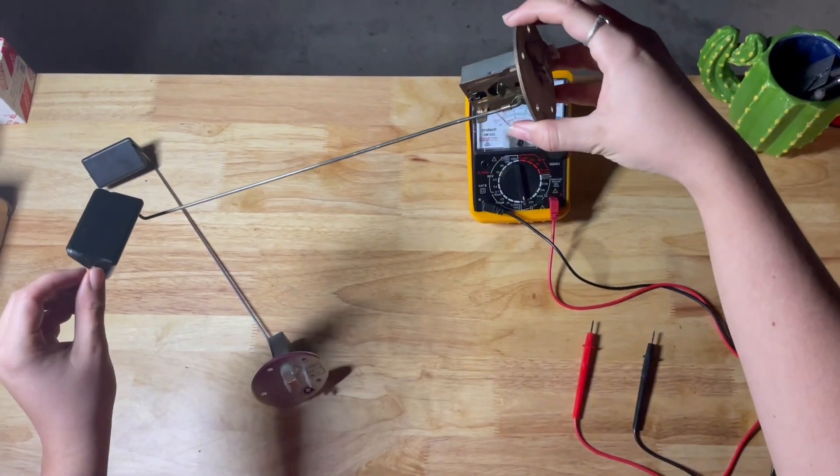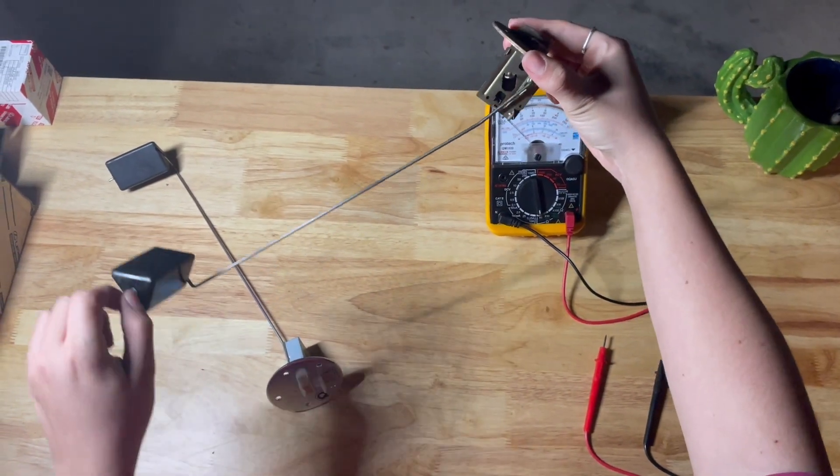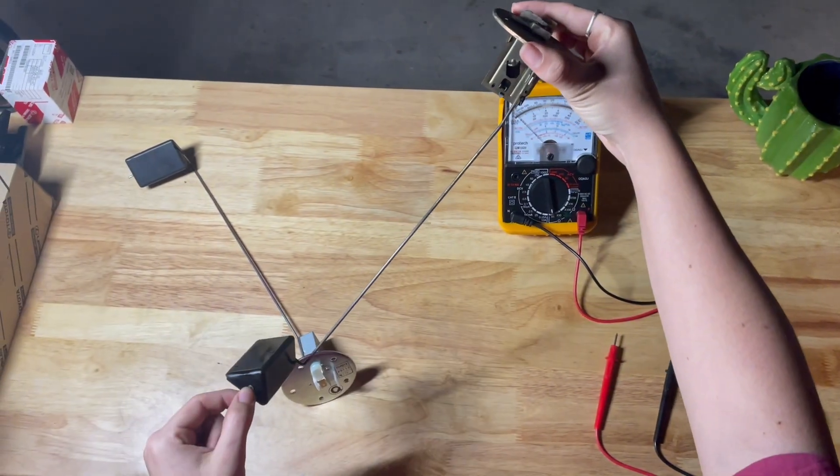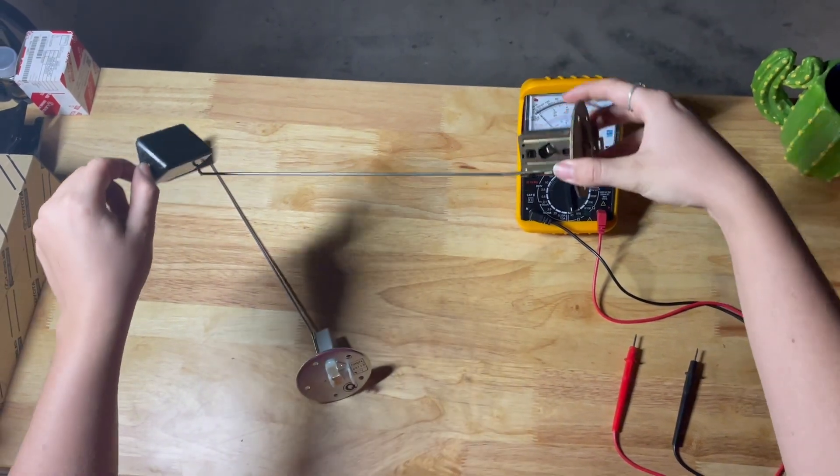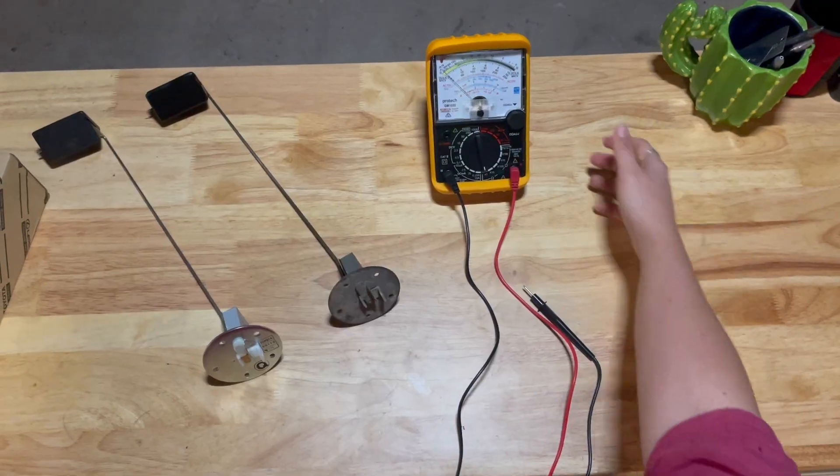This here is what your fuel sender looks like. It works as a float style, so it goes up and down, sending a message to your fuel gauge letting you know how much fuel you've got.